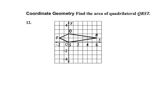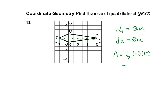For the final problem, I need to find the diagonals from the coordinate grid. Diagonal 1 is 2 units. Diagonal 2, from T to R, is 8 units. So the area equals one-half of 2 times 8, which is 8 square units. And that's it for this lesson — may the force be with you.